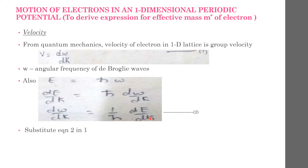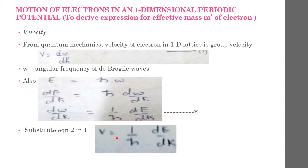Substituting equation 2 in equation 1, we get the velocity v = (1/ℏ)(dE/dk), equation 3.